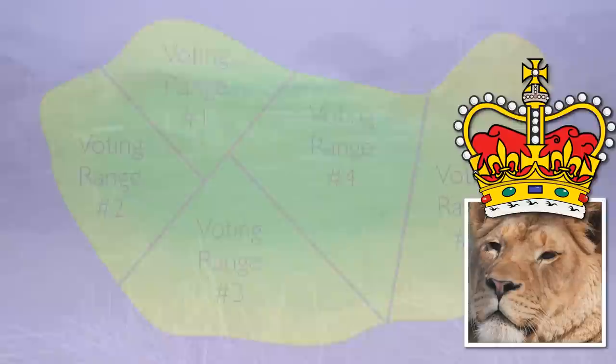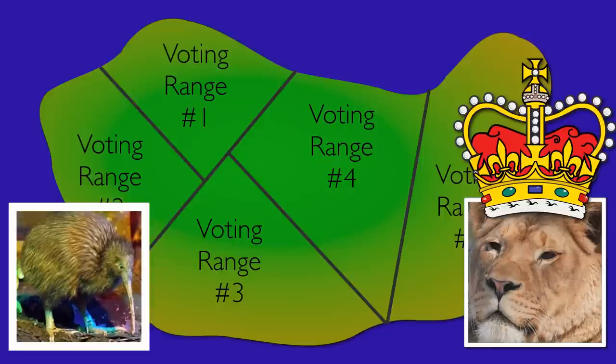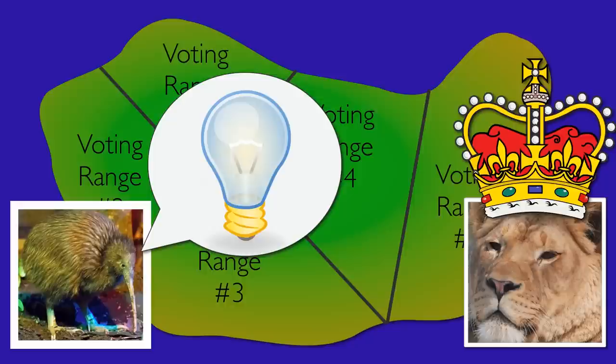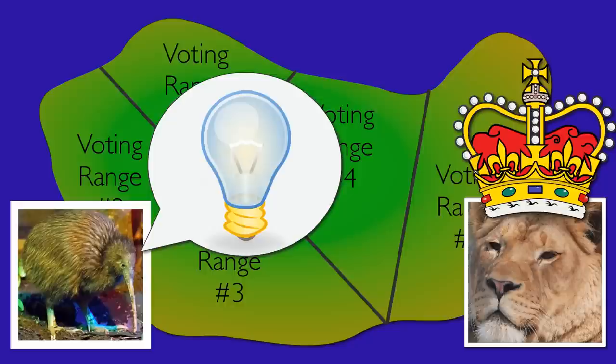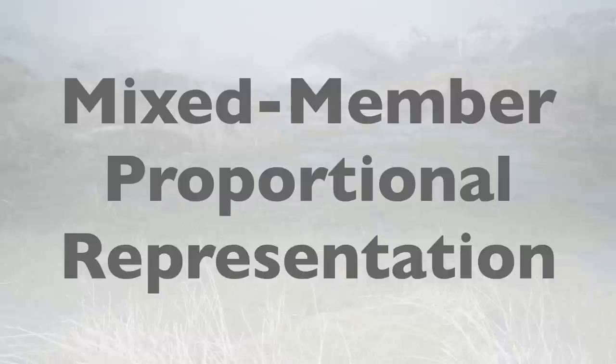This seems unfair to Queen Lion, but she's not sure how to fix it. The citizens like having local representatives and don't want to change the range boundaries. But luckily, Kiwi, one of the citizens of this island, has a suggestion for Queen Lion on how she can make the system better while keeping local representation and leaving the ranges as they are. The idea is called Mixed Member Proportional, or MMP, and it makes two changes.